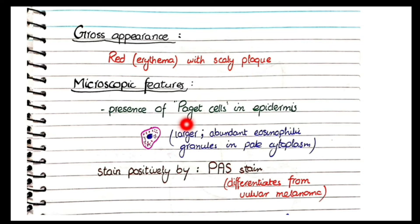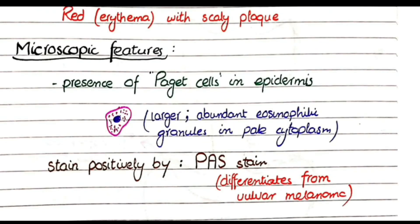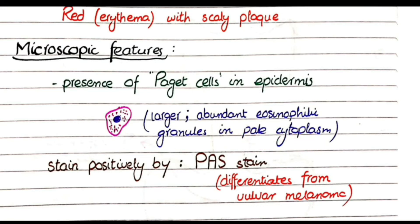For microscopic features, you will see Paget's cells in the epidermis. The epidermis is made of multiple layers of cells, and within these layers you will find Paget's cells, which are large in size with pale cytoplasm and abundant eosinophilic granules.